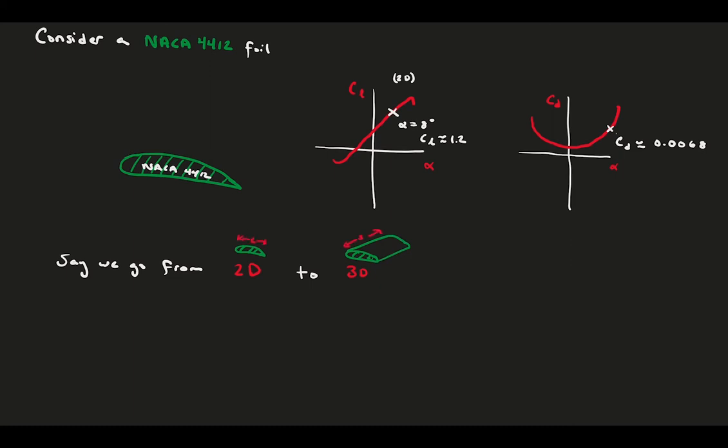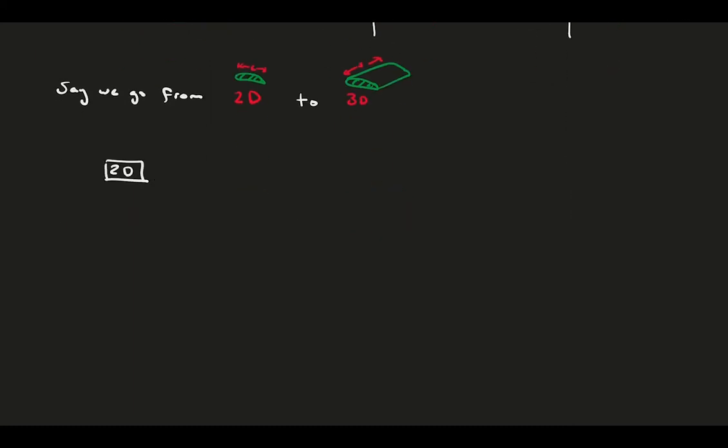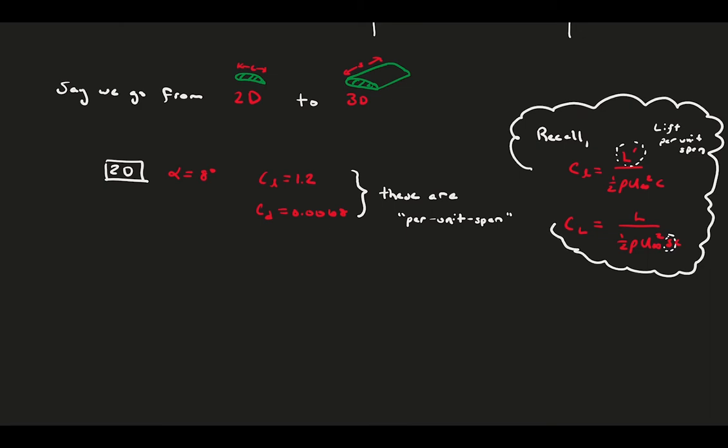From our graphs above, we've noted the lift and drag coefficients for this foil at a given angle of attack. Notice, these coefficients have lowercase letters in the subscript, lowercase l and lowercase d. This indicates that these are used to calculate per unit span quantities. Recall our lift equations from a much earlier video arranged to solve for the coefficients.